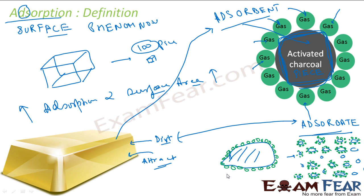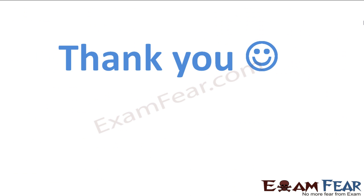So to summarize: adsorption is the accumulation of molecular species at the surface rather than at the bulk of the solid. Since it is a surface phenomenon, to increase adsorption we increase the surface area, and this is done by breaking a particular substance into small pieces, because the moment you break it into smaller pieces, the surface area increases.